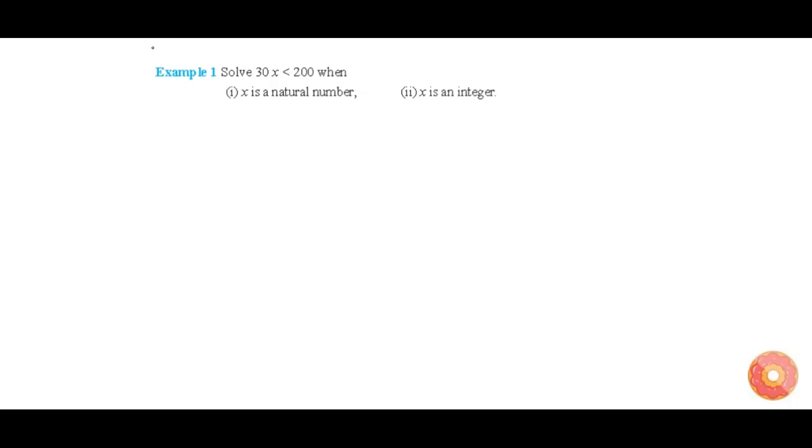In this question we have to solve for x for the given inequality 30x less than 200. For the first case x is a natural number, and for the second case x is an integer.